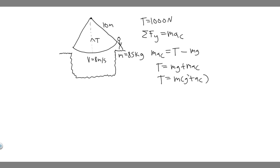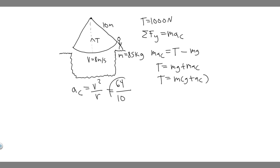We're not given the centripetal acceleration directly, but we can use the formula a_c = v²/r. We know the mass is 85 kg, gravity is 9.8 m/s², the velocity at the bottom is 8 m/s, and the length of the vine is the radius, 10 meters. So a_c = 8² / 10 = 64 / 10 = 6.4 m/s². We use the velocity at the bottom because that's the point where it's given to us.